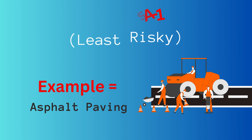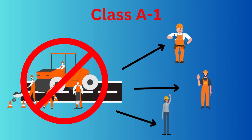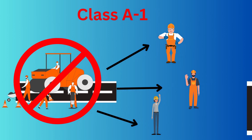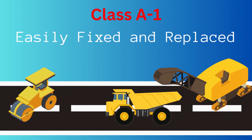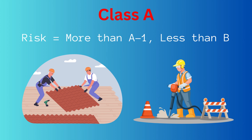Why is this type of work considered less risky? Consider that a performance bond guarantees the completion of work under a contract. Under normal circumstances, if an asphalt paving contractor cannot perform, a bond company could likely find another contractor to complete the contract for a similar price. Additionally, if work needs to be corrected, it can usually be milled up and replaced easily.